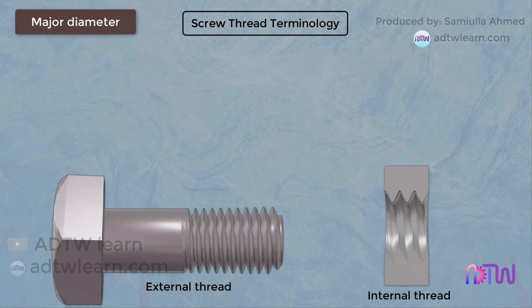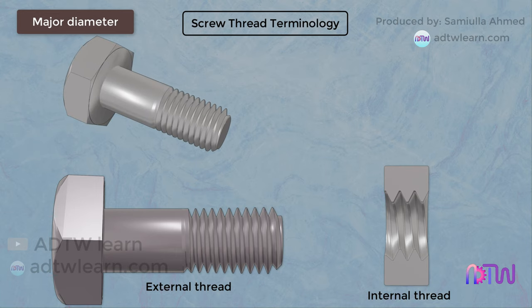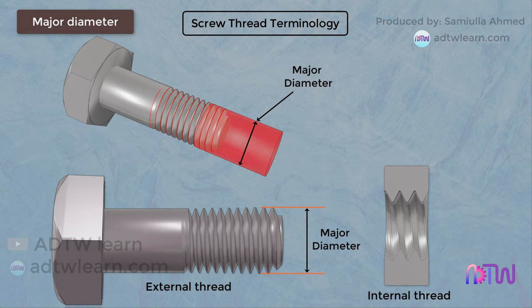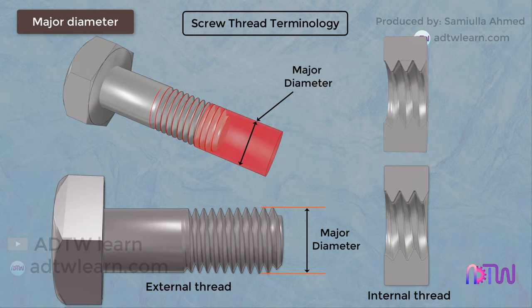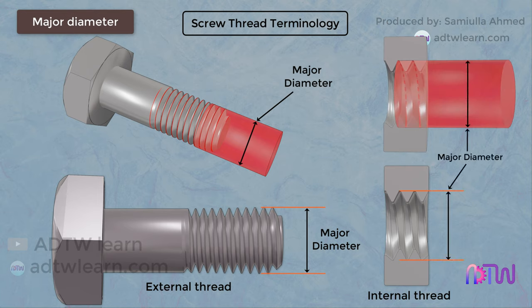Major Diameter: for an external thread, the major diameter is the diameter of the imaginary coaxial cylinder that just touches the root of an internal thread. For an internal thread, the major diameter is the diameter of the imaginary coaxial cylinder that just touches the root of an external thread.